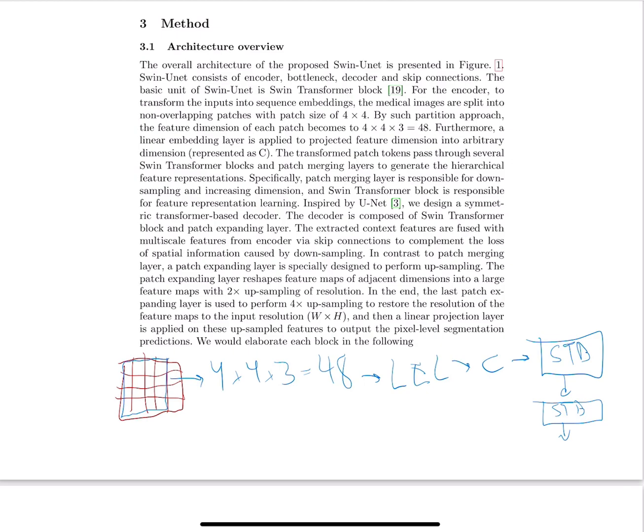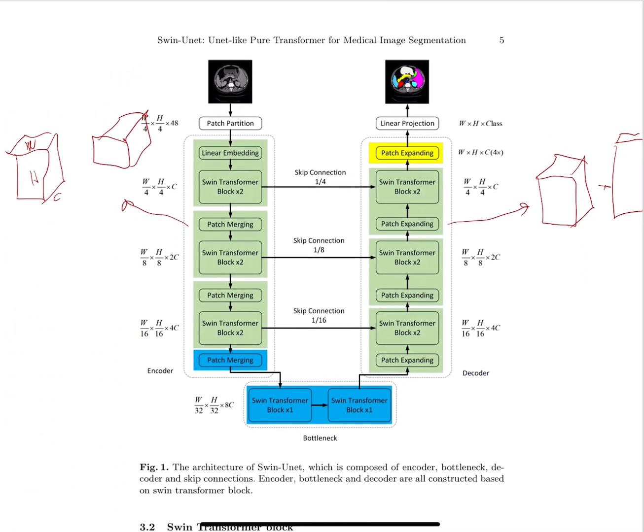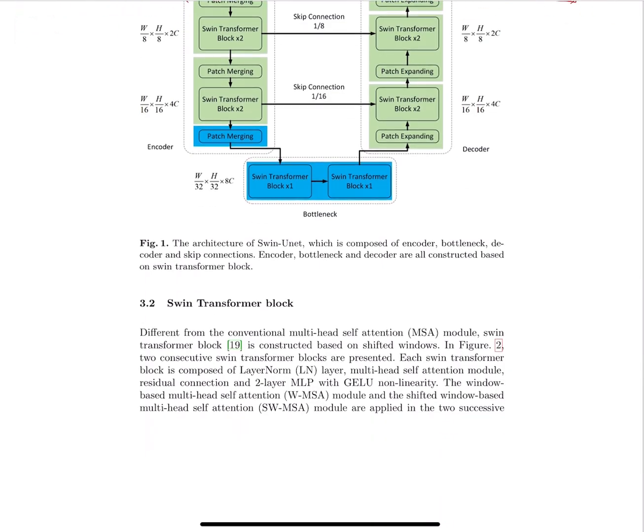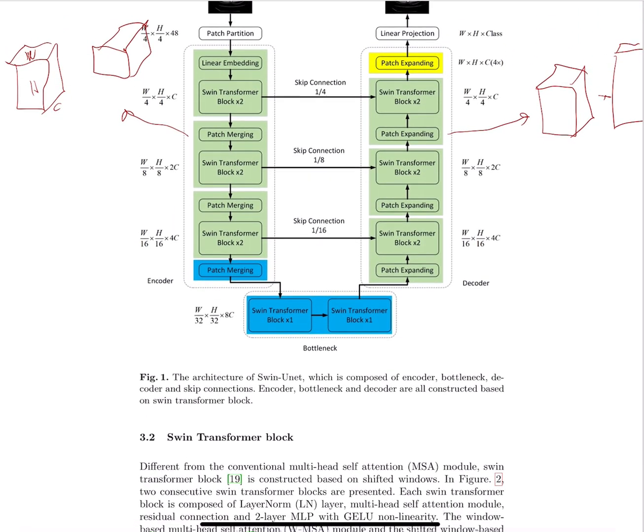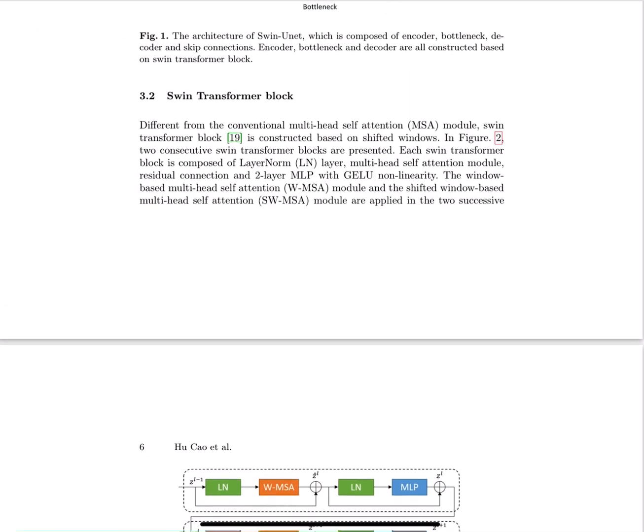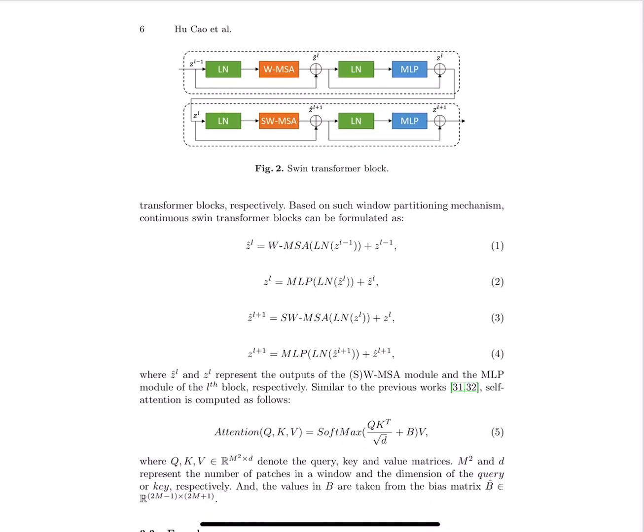Also they have skip links which come from their U-Net architecture, and they show here that you can have improvements on the segmentation, which is not surprising. This is the usual way it works with U-Net—that's basically what U-Net brought as skip connections, so they just use it as well.